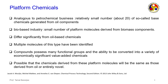What are platform chemicals? Analogous to the petrochemical business, a relatively small number — about 20 so-called base chemicals — are generated from oil components. In a biorefinery, we similarly have a small number of platform molecules derived from biomass components. Examples from oil refinery include benzene, toluene, xylene, and C2/C3 chains like polyethylene and polypropylene feedstocks.